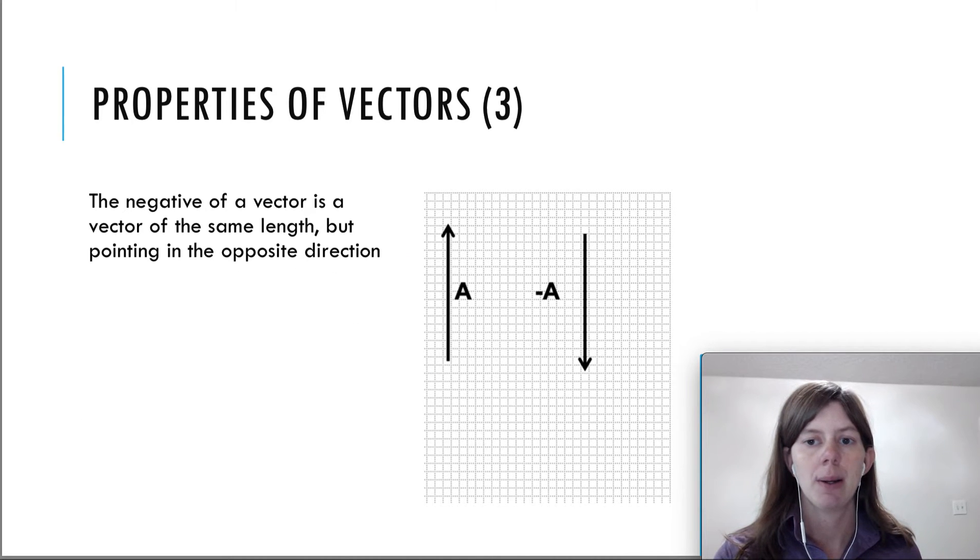The third property is that the negative of a vector is a vector of the same length but pointing in the opposite direction. So if vector a is pointing up, that means vector negative a is pointing down, but it still has the same length, the same magnitude, just the opposite direction.